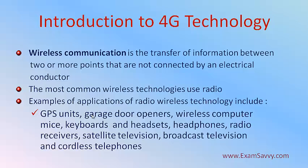Some examples include cell phone networks, Wi-Fi local networks, and terrestrial microwave networks. Many more examples are listed such as GPS — Global Positioning System units, garage door openers, wireless computer mice, keyboards, headsets, headphones, radio receivers, satellite television, broadcast television, and cordless telephones. These are some examples you can list out for 4G technology. This is just an introduction about a 4G wireless system.